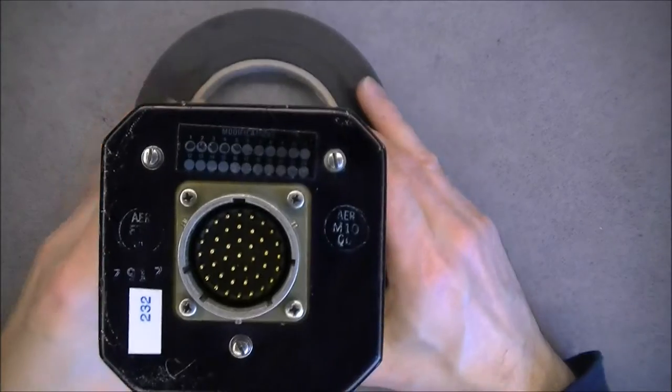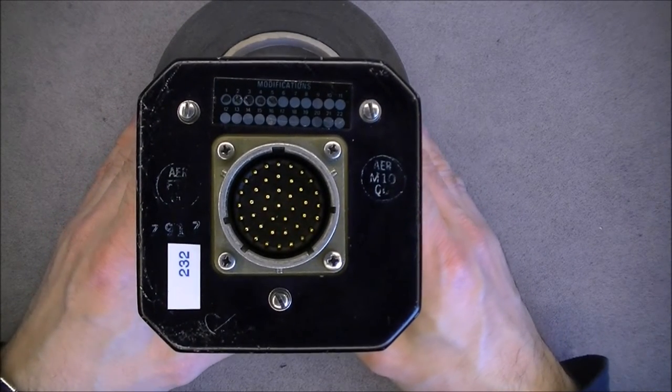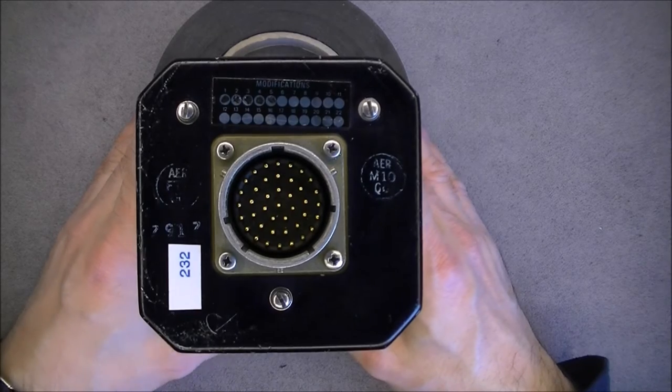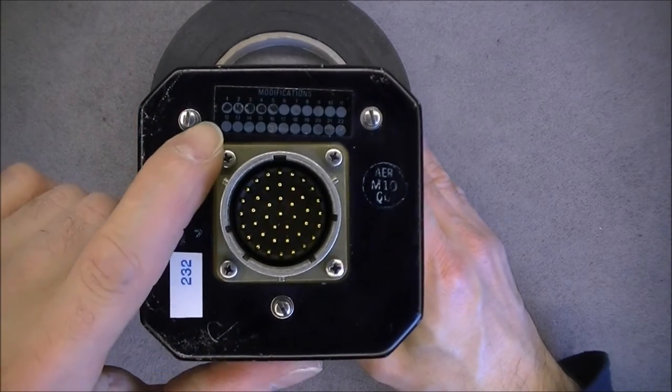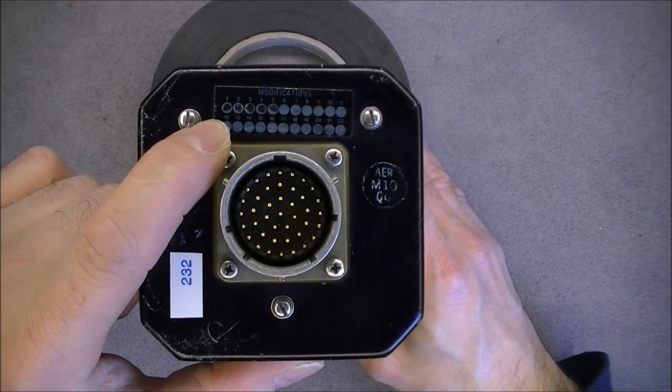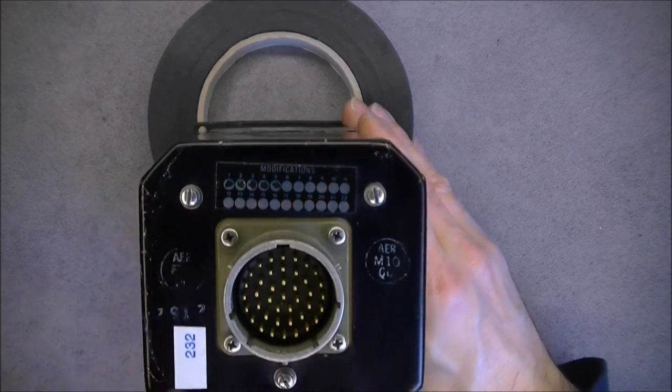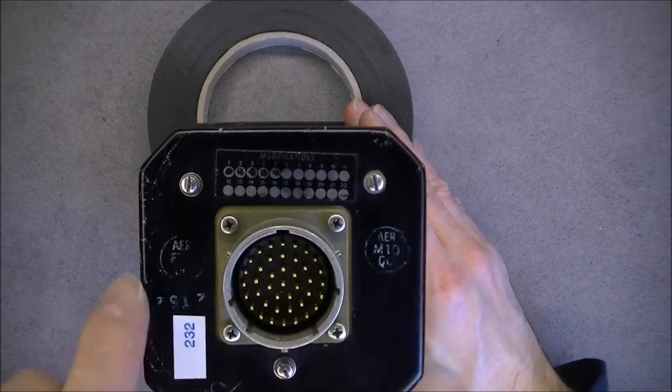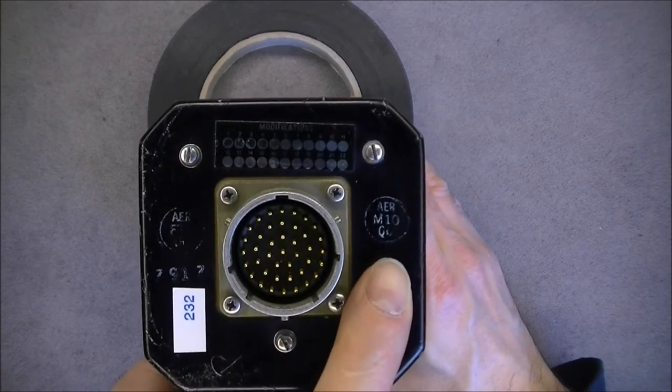Backside, we have the main connector, a round military type of connector with a modification label here showing it received five modifications. These are the screws to attach the aluminum cover, some quality control or something stamped here.